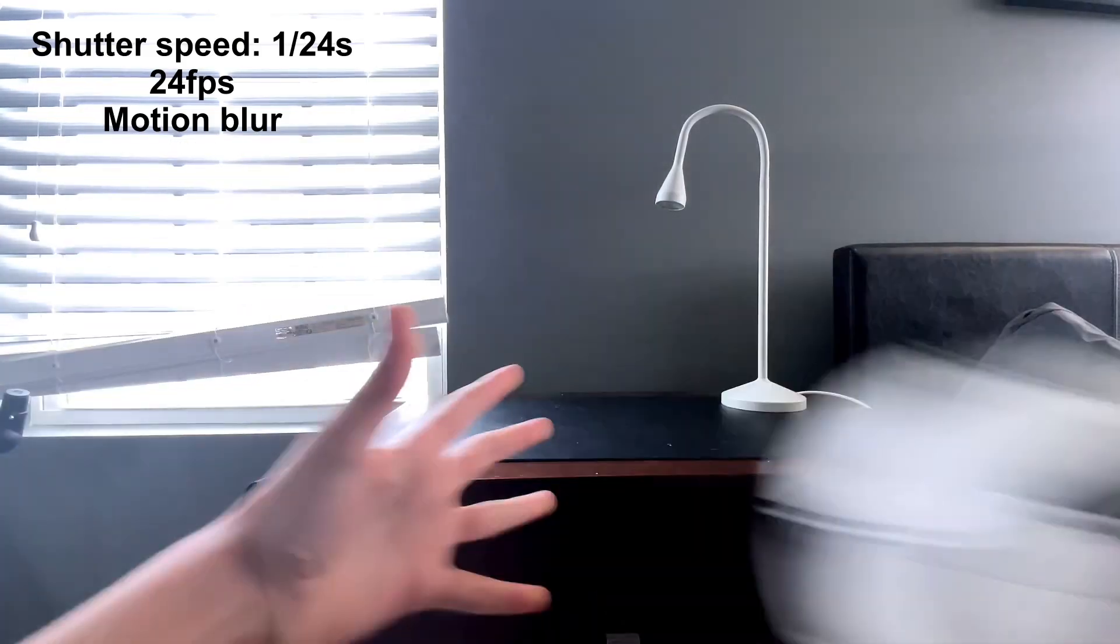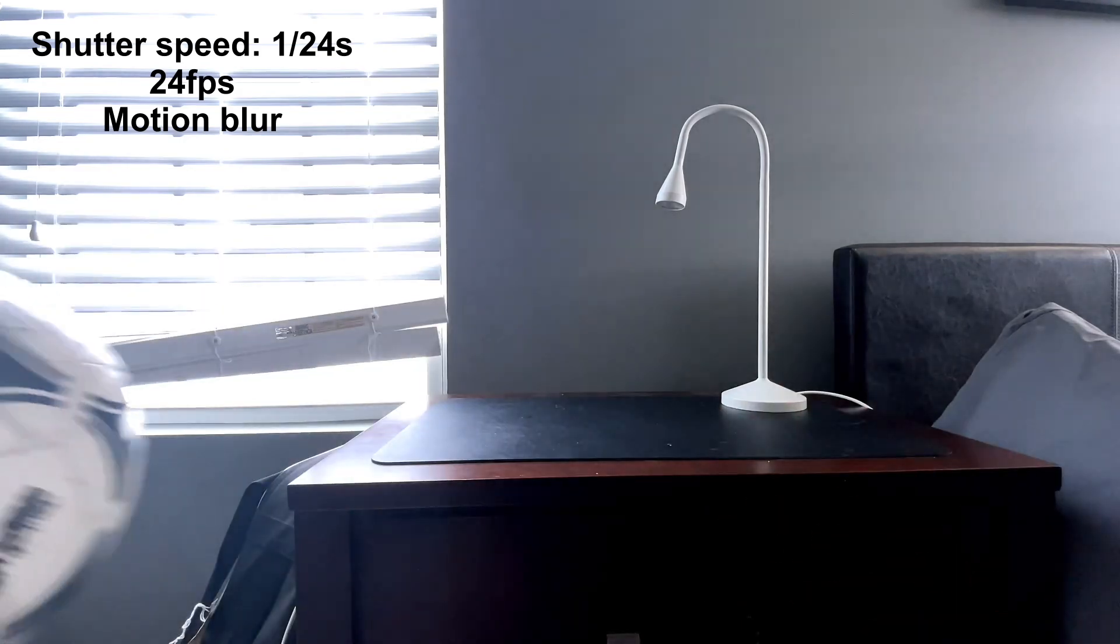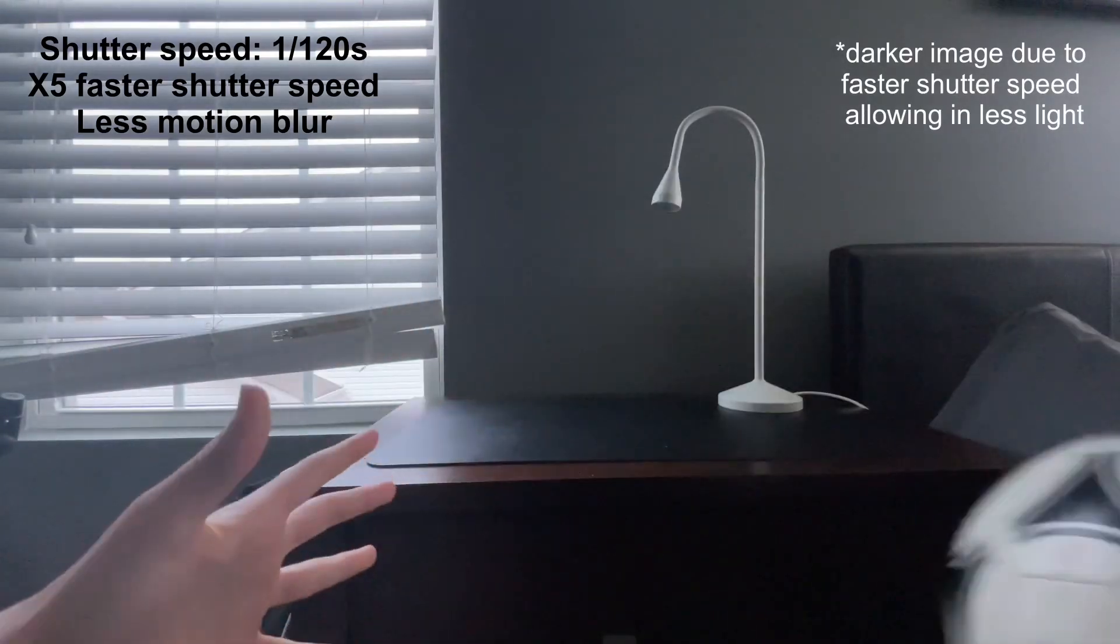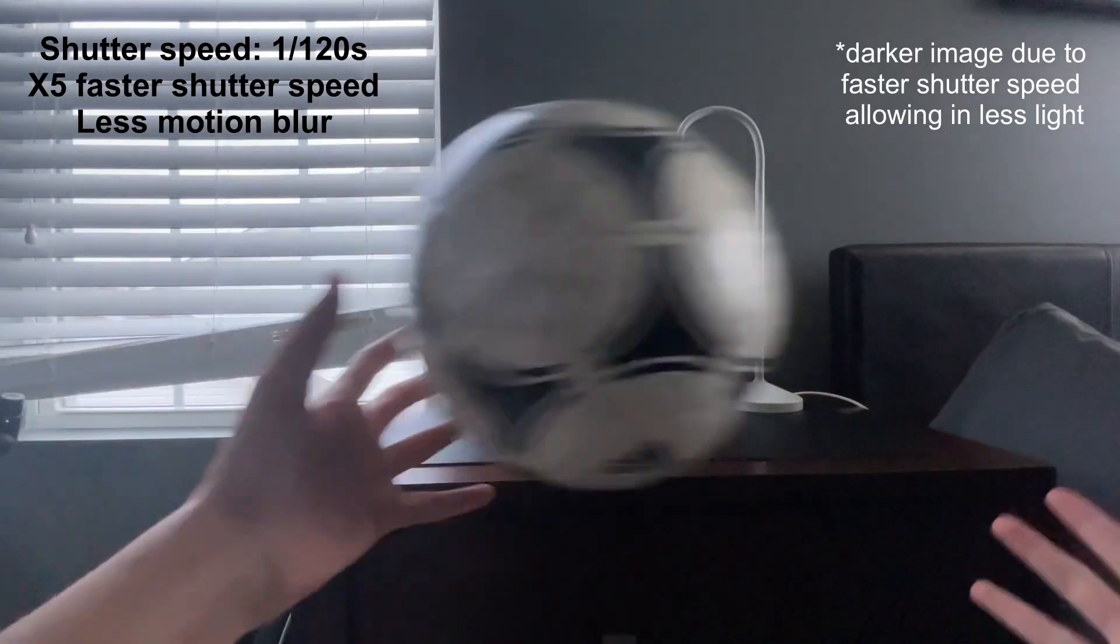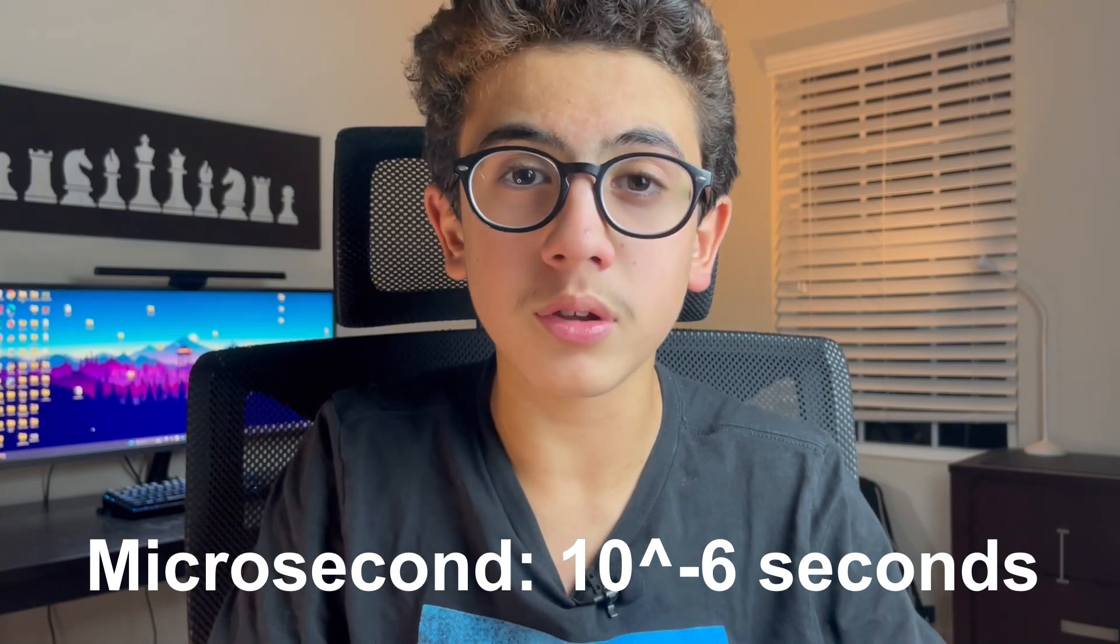This blur also translates over to video, which is just these images combined together. Therefore, to film a bee flapping its wings, you would need a camera that shoots at above 230 FPS. To film motions that are faster, or occur in shorter periods of time, you need a shutter that turns on and off faster and faster. But at some point, around the microsecond timescale, you just physically can't create a faster shutter.